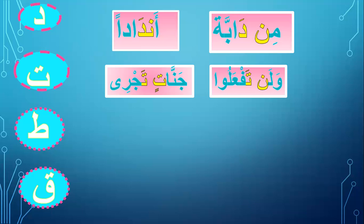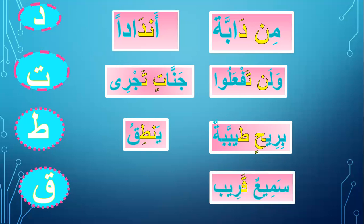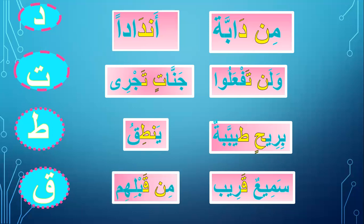Let's practice letter Ta: 'Jannatin tajri,' 'Bi'riyhin tajri.' Now letter Qaf. 'Sami'an qariban.' 'Min qabalihim.' Please repeat: 'Min qabalihim.' Yes, it's not 'min qabalihim' clearly — the sound is not clear. The nasal sound is heard: 'miq.' Don't forget the Ghunna.